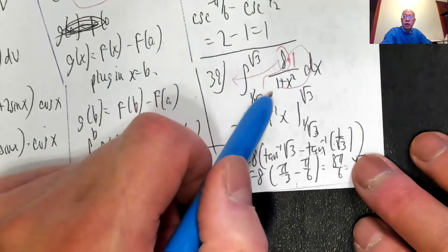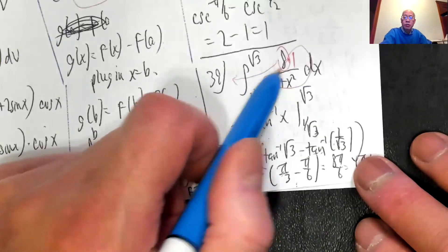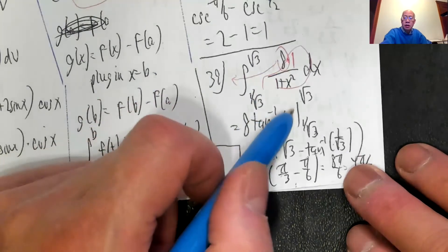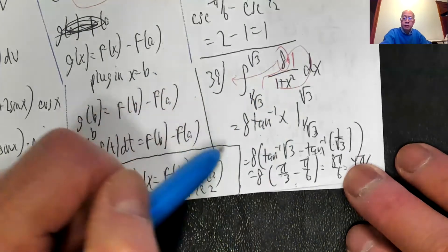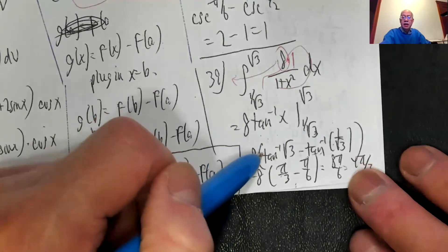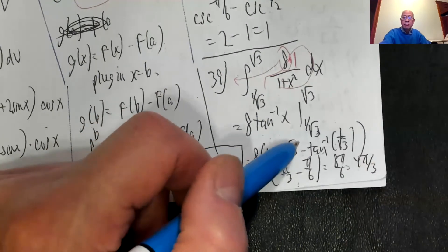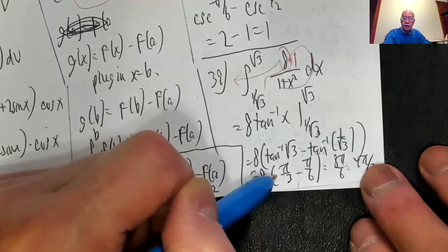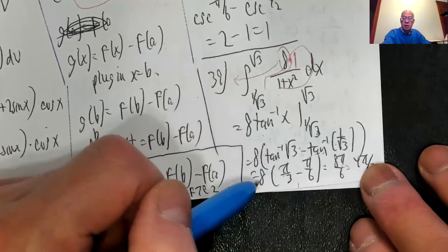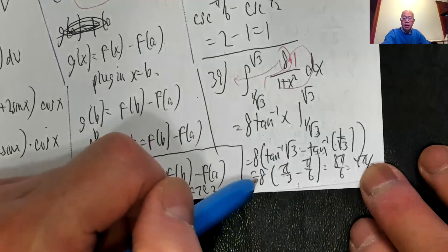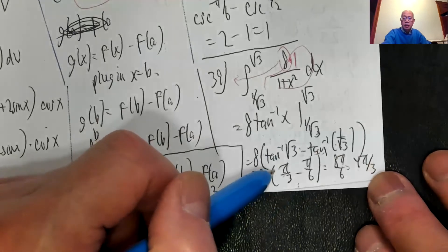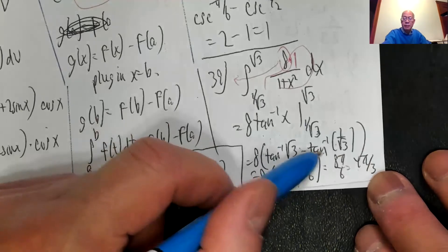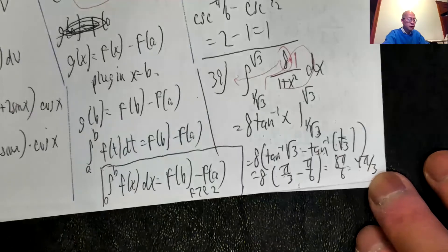Eight over one plus x squared treated as eight times one over one plus x squared. That's eight times inverse tangent of x from one over radical three to radical three. So it's eight times inverse tangent of radical three minus inverse tangent of one over radical three. This comes out to be pi over three. This is pi over six. So I have two pi over six minus pi over six, which is pi over six times eight, eight pi over six, four pi over three.